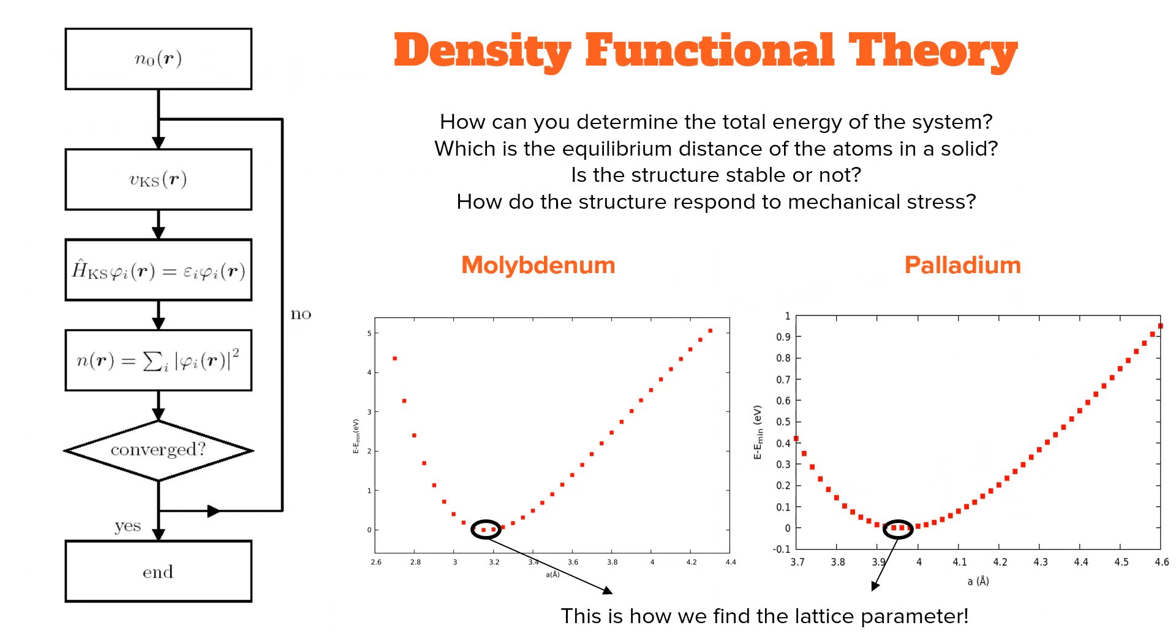A possible approach to this problem is density functional theory. DFT is a self-consistent algorithm that allows us to determine important features of our crystal, starting from an initial electronic density. Some examples of these properties are the total energy of the system, the equilibrium distance of the ions, the mechanical stability, and so on.